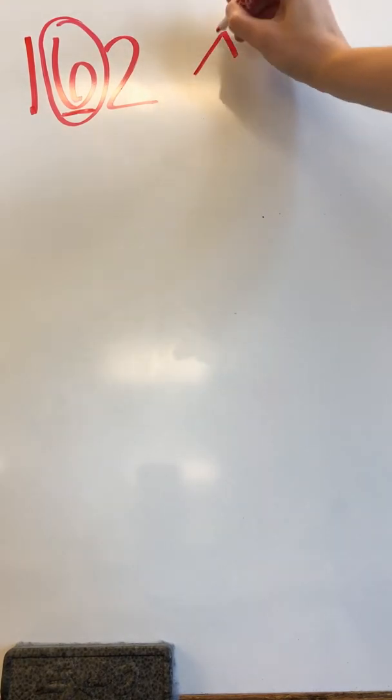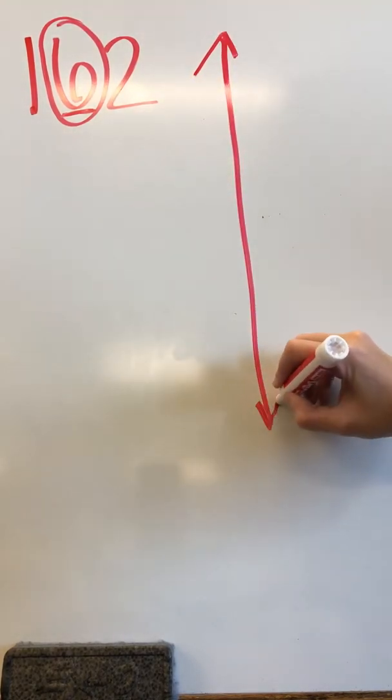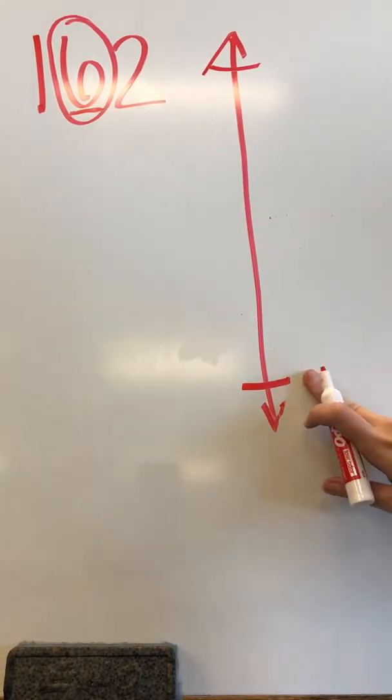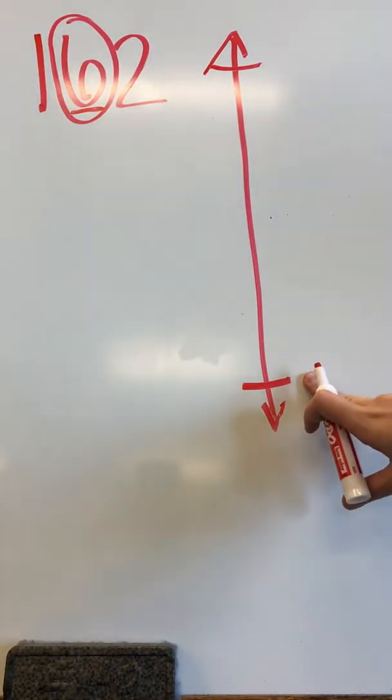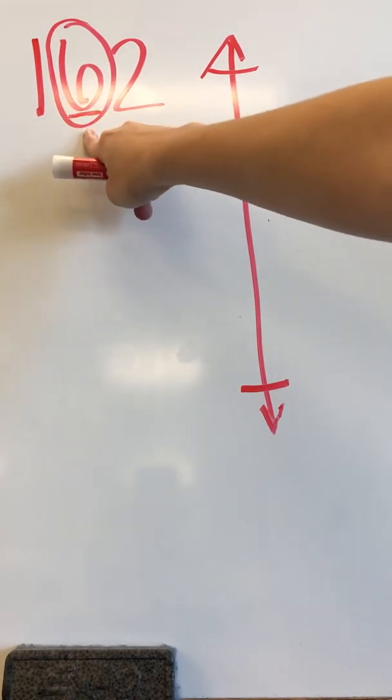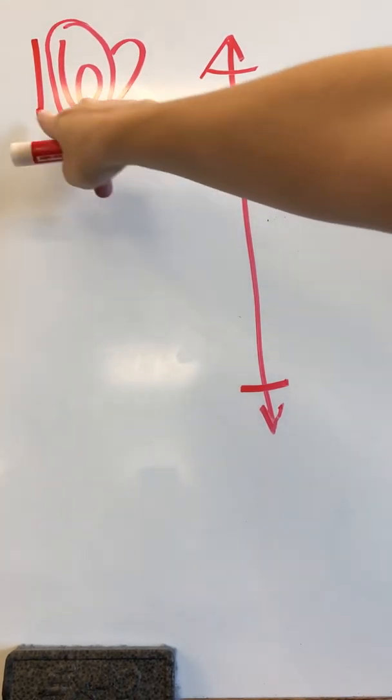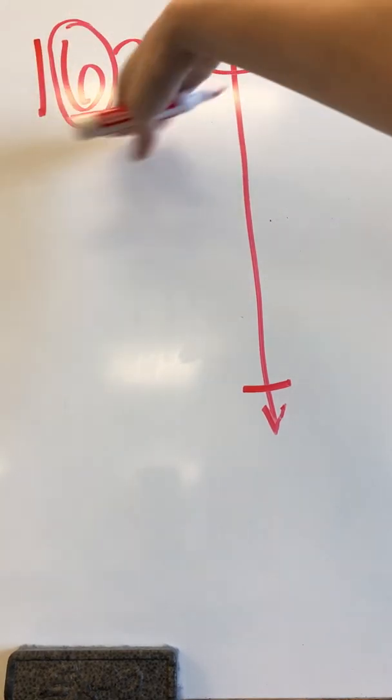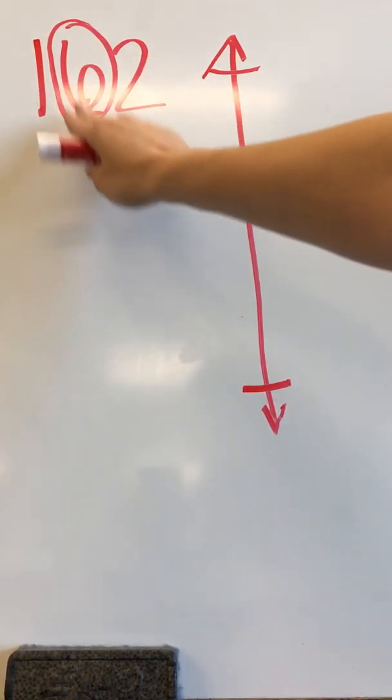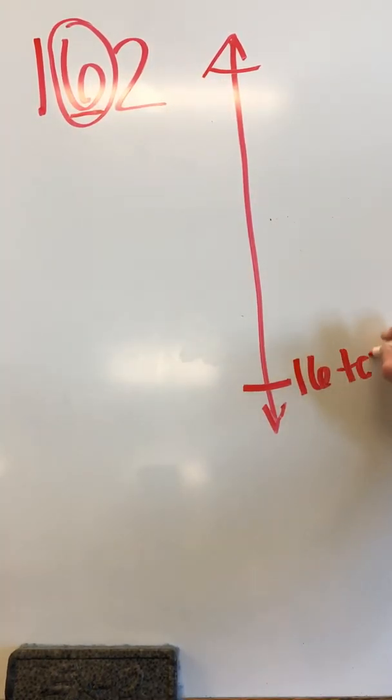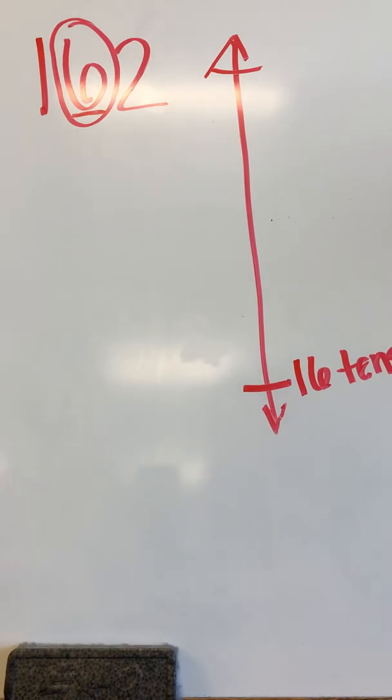We then create our vertical number line. We label our two endpoints. Now the first endpoint we're going to figure out by figuring out how many tens are already in this number. Well there's a 6 in the tens place, but we also have this 100 here. So we can say that this number has 16 tens in it. So on this side I'm going to write 16 tens for the bottom of my number line.